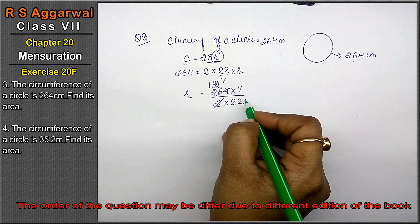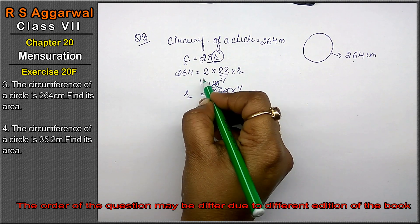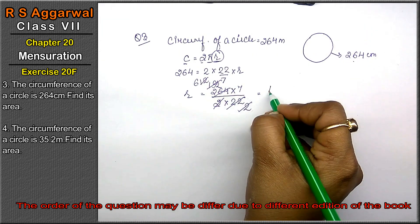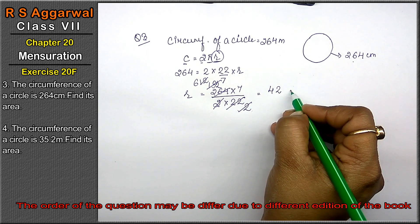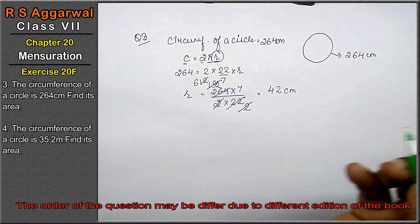2 twos are 4. 11 twos are 22. 11 ones are 11. 11 twos are 22. 2 ones are 2. 2 six are 12. 7 fours is. 6 sevens is. 42 meter. Sorry, centimeter. Right friends?